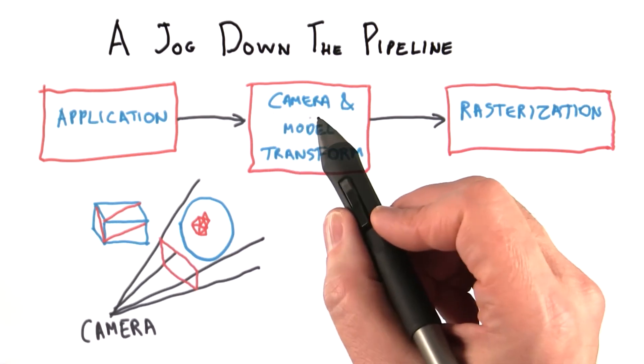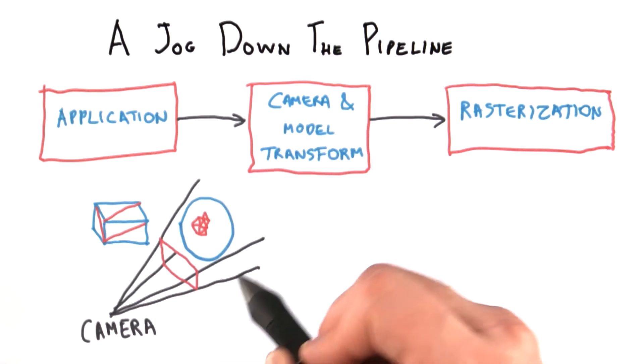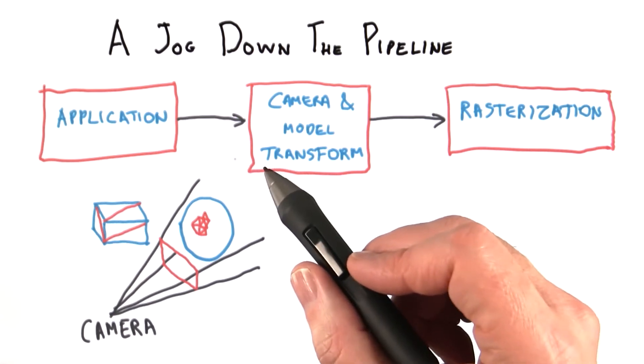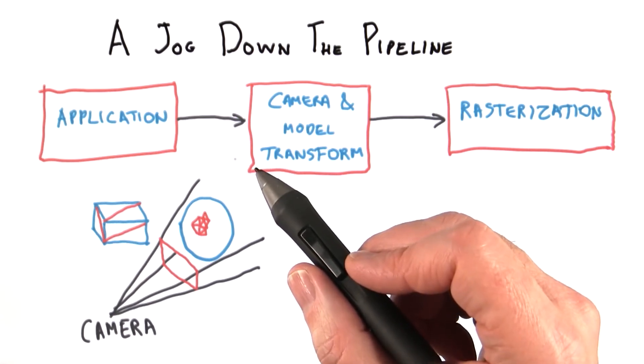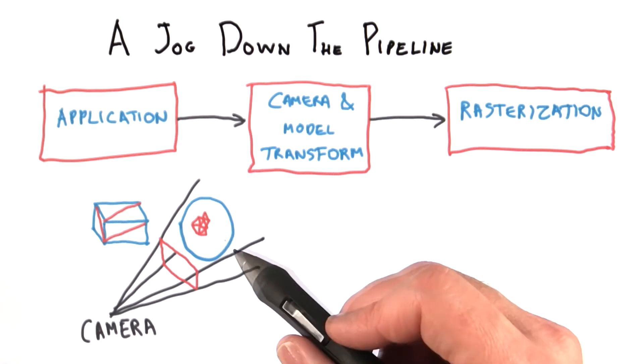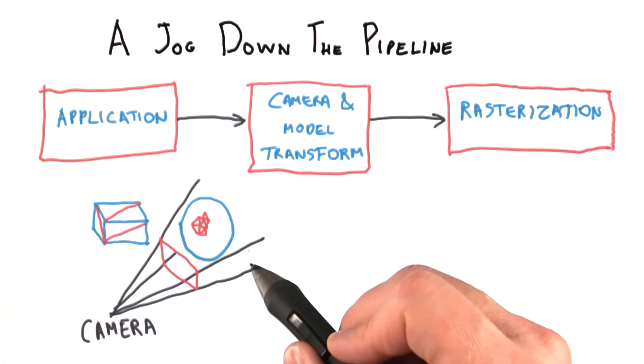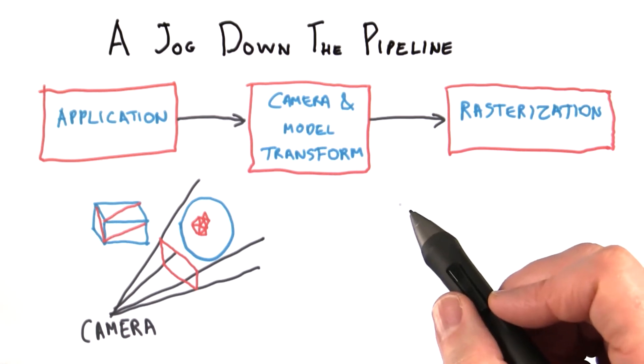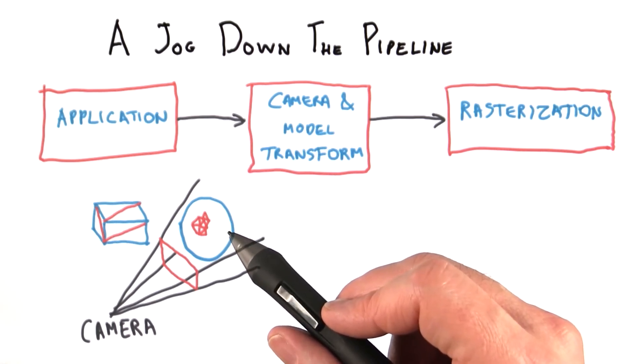In the second stage of the pipeline, these triangles are modified by the camera's view of the world, along with whatever modeling transform is applied. A modeling transform is a way to modify the location, orientation, and even the size of a part. For example, if you were rendering a bouncing ball, the ball's modeling transform each frame would move the ball to a different location along its path.